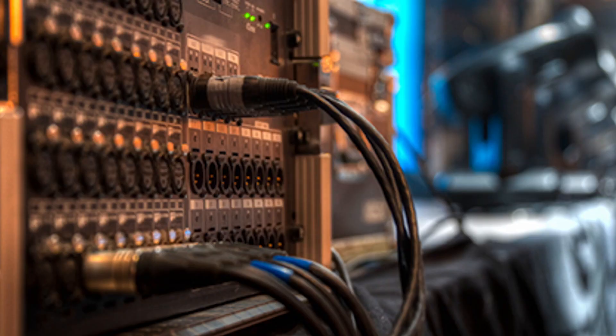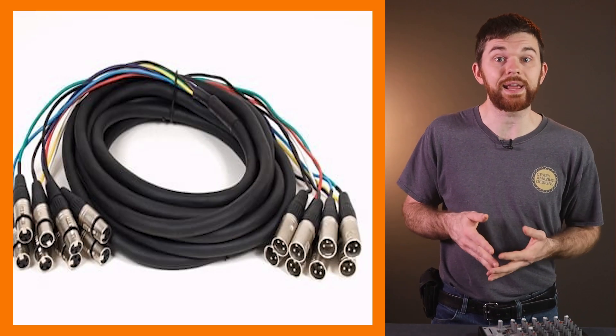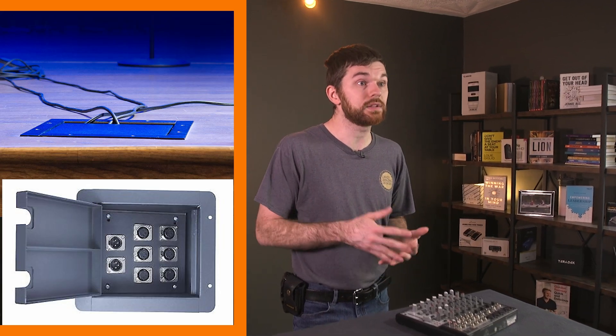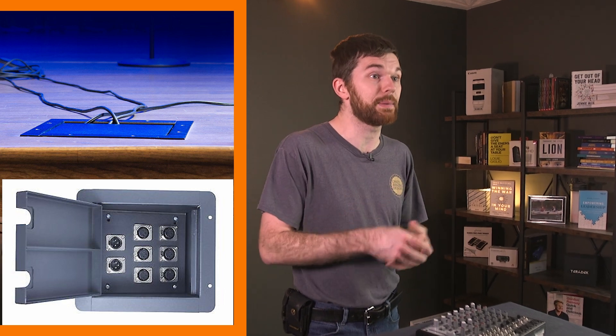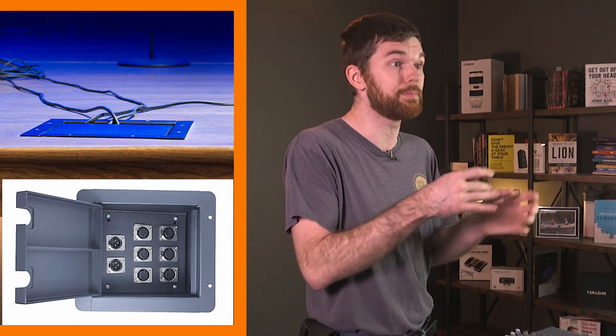We need to get the signals from all over the stage to the snake stage box. We can do this in one of two ways. Number one: run smaller snakes to the various locations on the stage where inputs need to be connected — typically using smaller snakes with three hanging connectors on both ends. Many churches and venues have floor and wall plates around the stage where inputs can be connected. These ports are numbered and hidden wires run from these ports to the main stage box. A sound snake is sold based on channel count, number of connectors on each end, and its length.